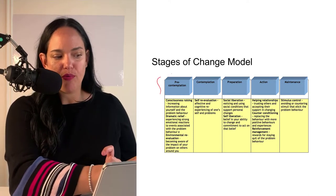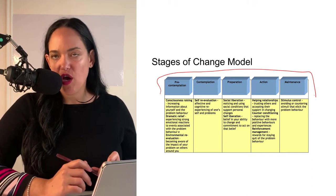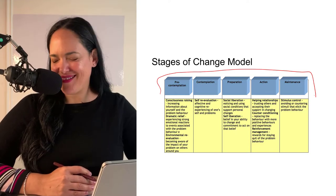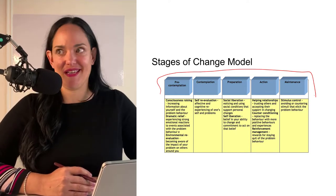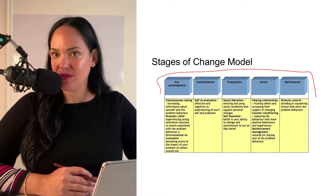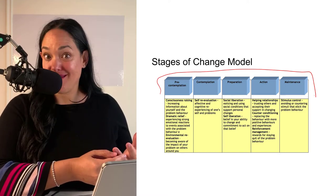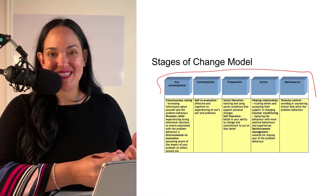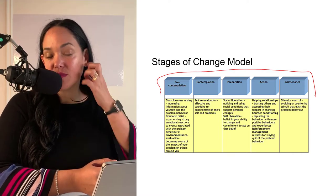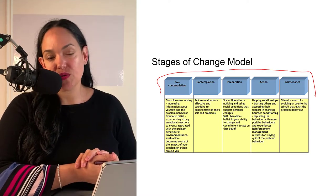The stages of change model breaks behavior down into five different stages. Pre-contemplation — I think of my friend Anthony, who's a smoker. He loves to smoke, does not want to change, does not want to quit, knows it's bad for him, and doesn't care. That's a hard stage, probably the hardest to work with. Sometimes we have to wait for that person to be ready to change, and we can't force it on people.